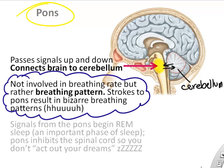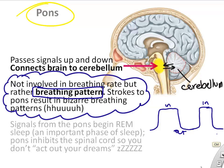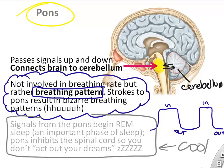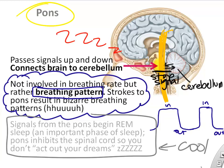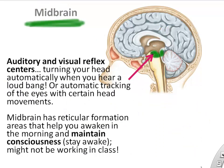A really interesting function of the pons is that it actually stops signals from moving out of the brain down to the spinal cord while you're sleeping, so that you don't act out your dreams.